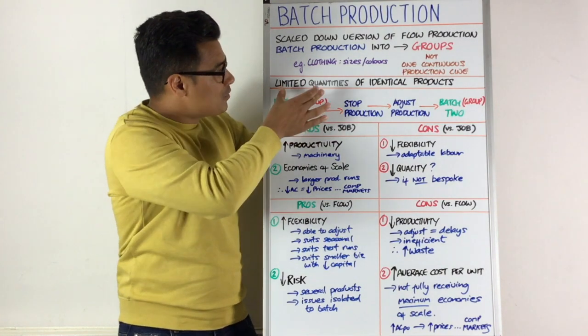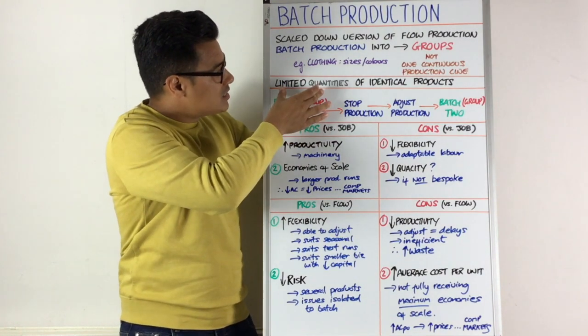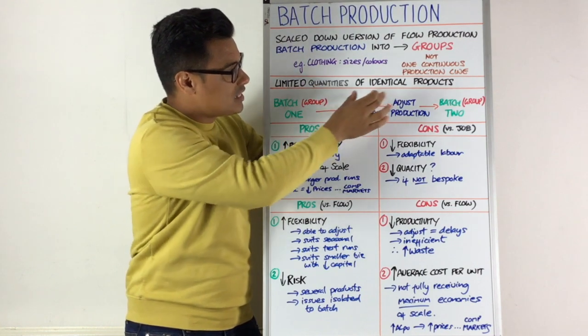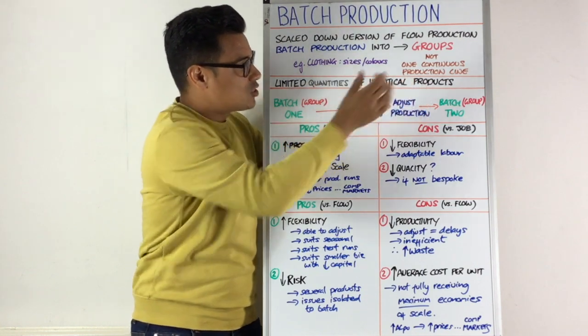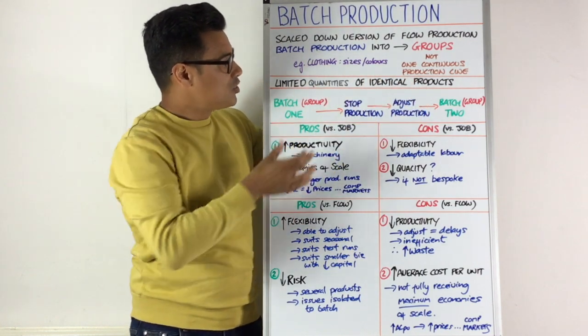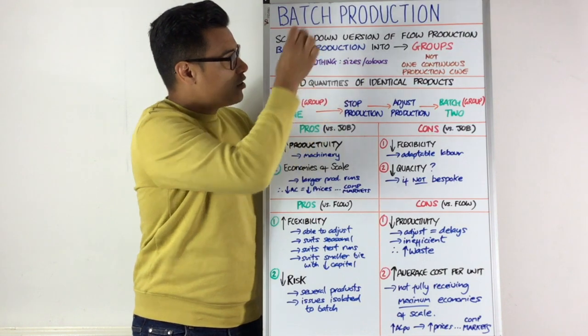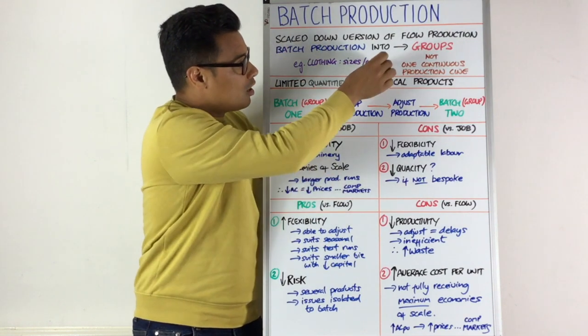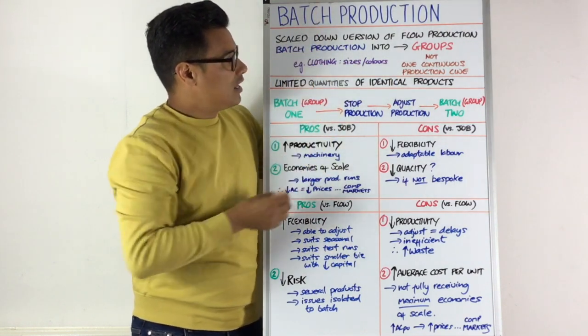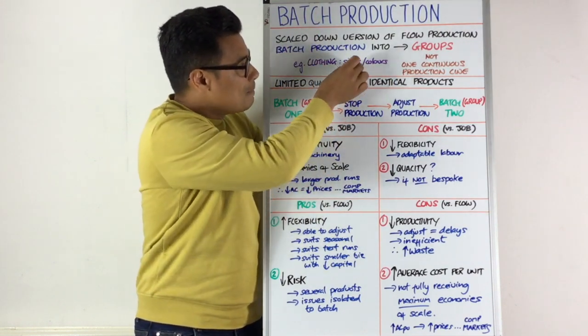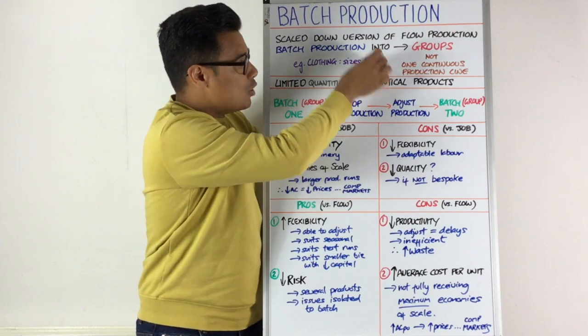With batch production, the key here is that you're going to have limited quantities of identical products. So you might have a certain amount of small red, or you might have a certain amount of medium blue.